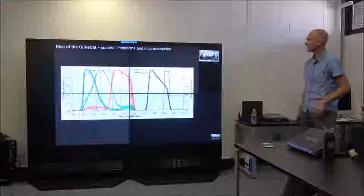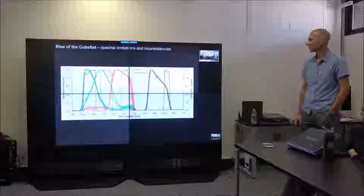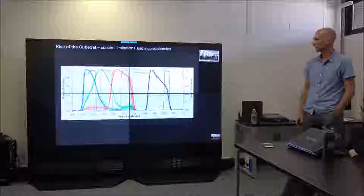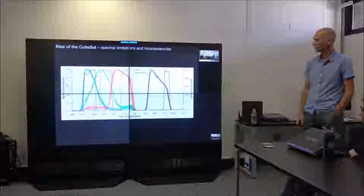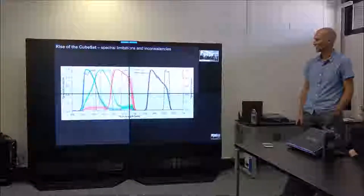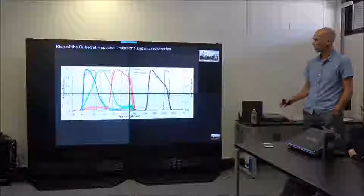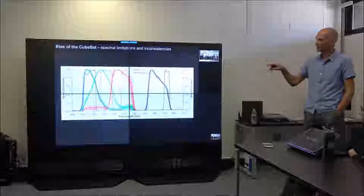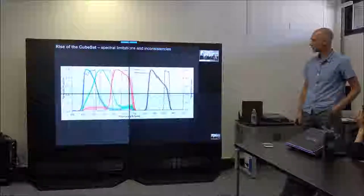This shows you the spectral response of a selection of CubeSat sensors. This is the average response of 16 CubeSat sensors, compared to the Landsat. And you can see it's quite different. The shading kind of gives you an idea of the variations between the sensors.